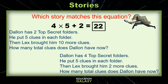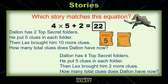So now we need to find the story that matches our equation. Let's look at the first one. Dallin has two top secret folders. He puts five clues in each folder. Then Lex brought him 10 more clues. How many total clues does Dallin have now? Let's look at what we have. Remember, it has to equal 22 total clues. Does that equal 22?